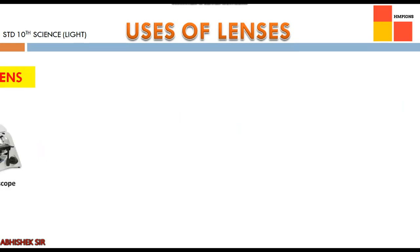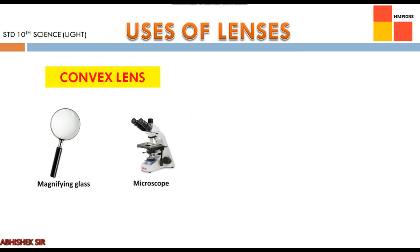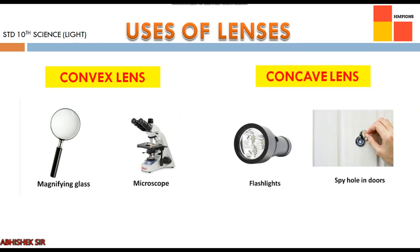Moving on to uses of lenses. Convex lens is used in magnifying glass and microscope. Concave lens is used in flashlights and spy holes in doors — though spy holes are more common in foreign countries for security purposes.